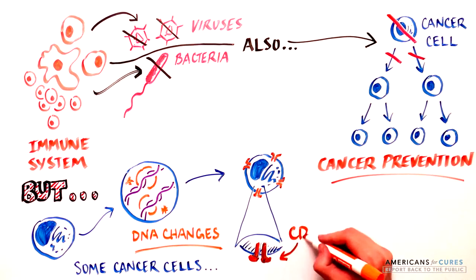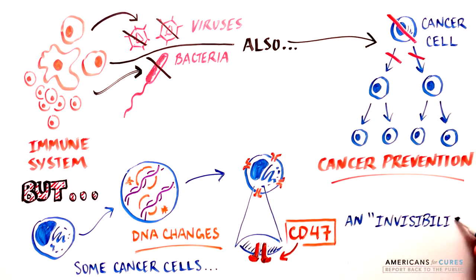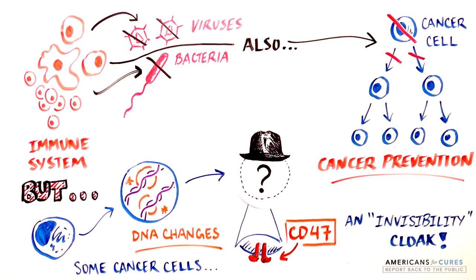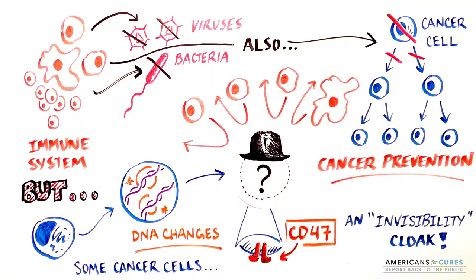One such invisibility cloak is the protein CD47, which helps give cancer cells and cancer stem cells the power to cloak themselves from the immune system's defenses.